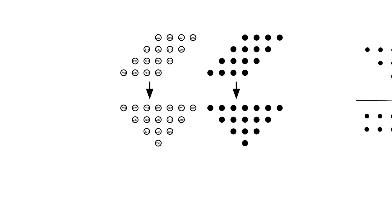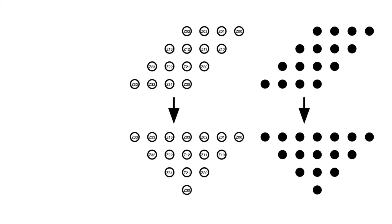When you look at full multiplication and the array multiplier, the majority of the effort is expended in combining the summands to produce the product. Forming the partial products is trivial because they can be formed using AND gates. When we look at the partial products, we discover that we have to combine them at every bit position using either half-adders or full-adders.